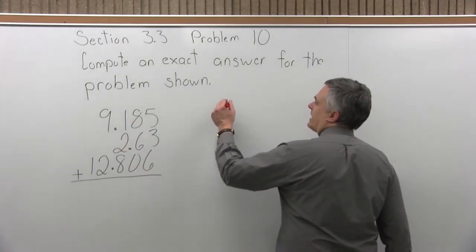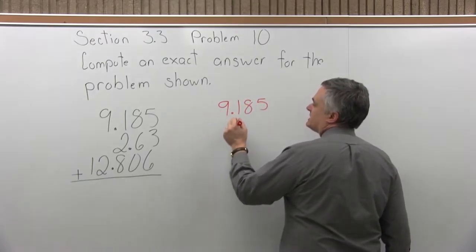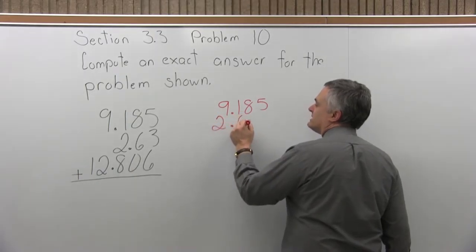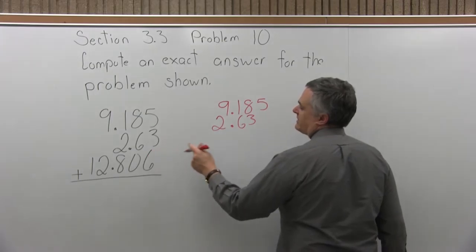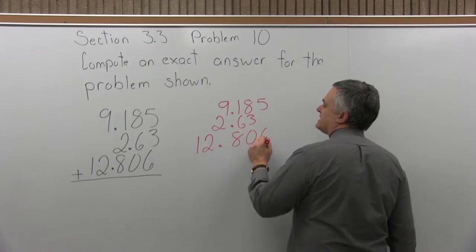I have to rewrite the problem so all the decimal points line up vertically. Let's start with the 9.185, the 2.63, that decimal has to line up, so 2.63. Now the decimals are in line vertically. And then the last one, 12.806.